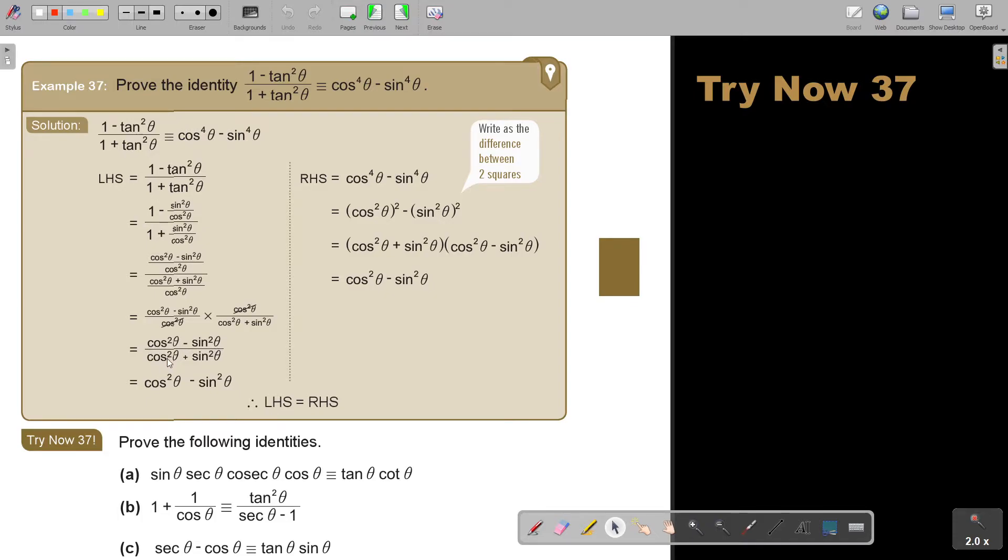But look here, cos squared plus sin squared is always, I can show it there, but that becomes 1. So, then it is cos squared. I don't even have to write down, I can just show you. That becomes 1, and that will be my final answer here.